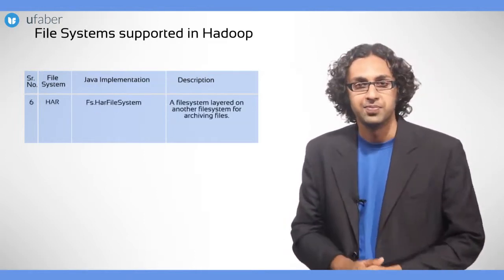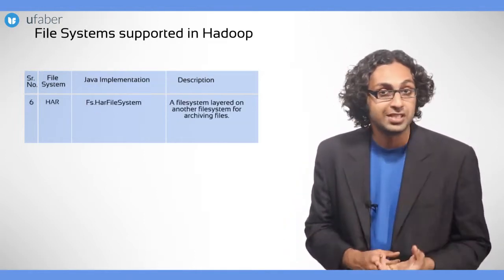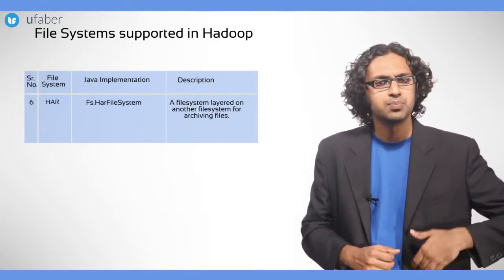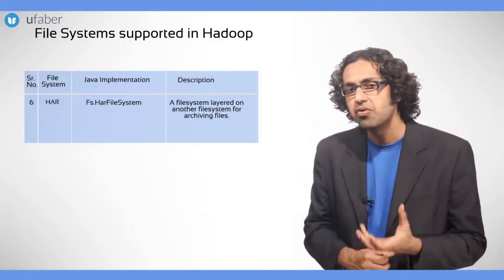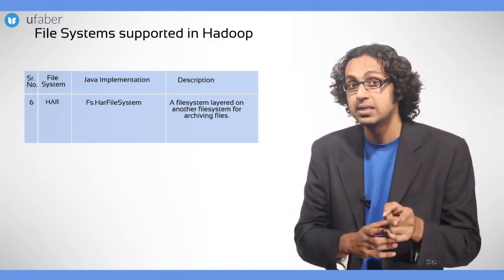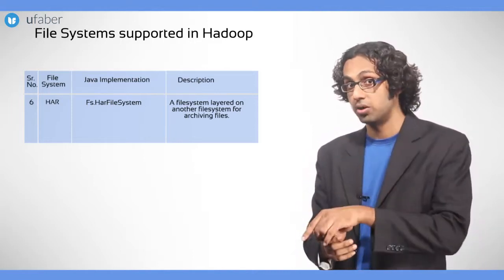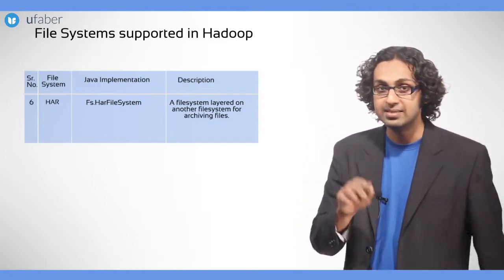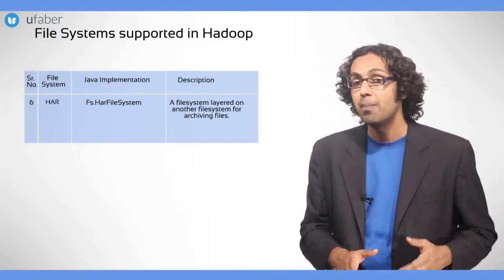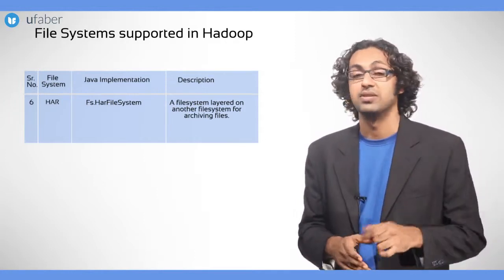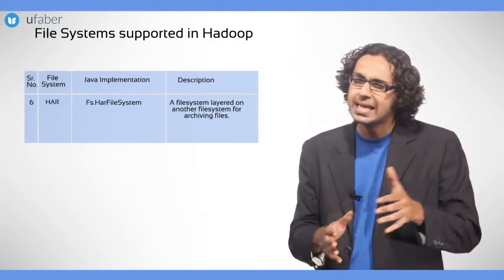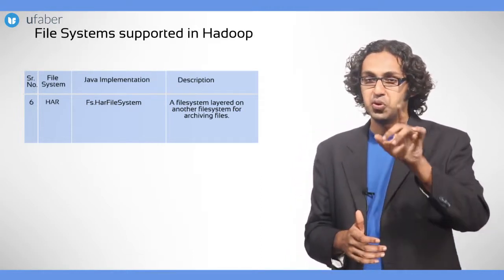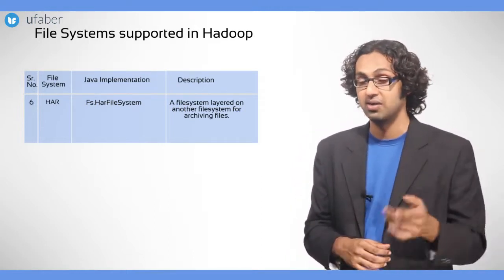HAR: archiving involves compressing a file before storing it — it is like creating a zip file. It is important to note that whichever file system Hadoop uses, the data stored in its blocks are always compressed and then stored. Needless to mention, this saves storage space. Whenever a particular block in the Hadoop cluster is accessed, by default the data gets uncompressed and then it is read. So HAR file system is used for archiving files.